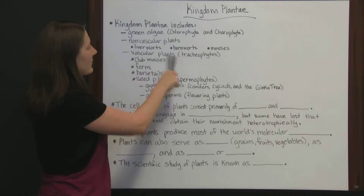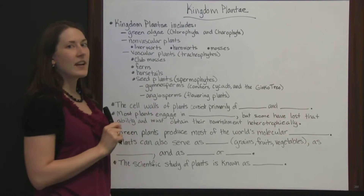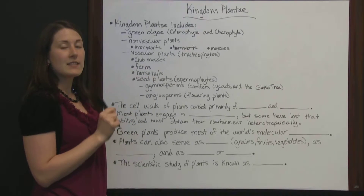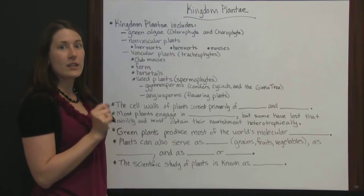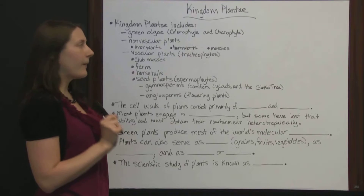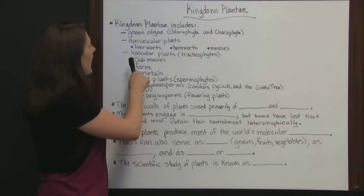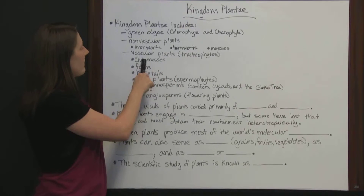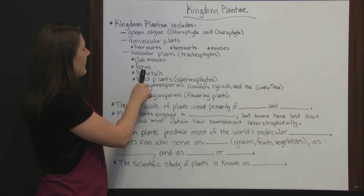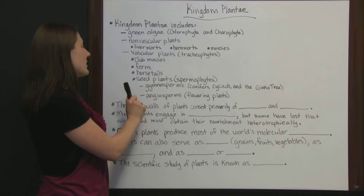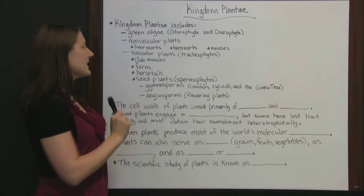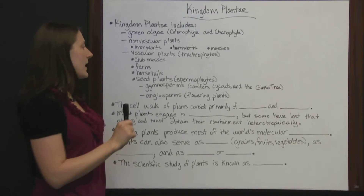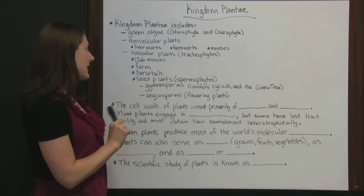Vascular plants, or tracheophytes, do have veins that carry nutrients and water throughout the plant. Vascular plants include clubmosses, ferns, horsetails, and seed plants, which are also known as spermophytes.